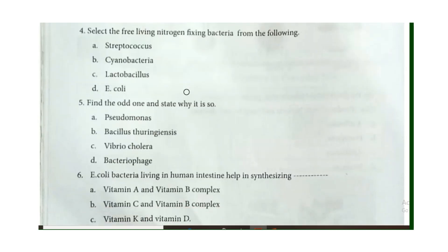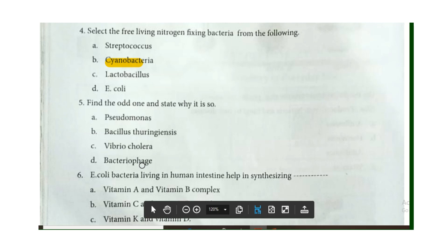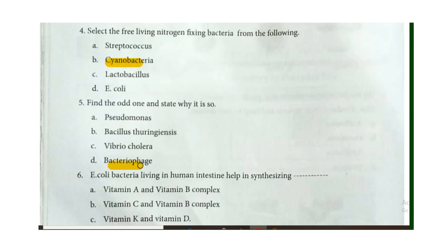Select the free-living nitrogen-fixing bacteria from the following cyanobacteria. Find out the odd one and state why it is so. The four options are: Pseudomonas, Bacillus thuringiensis, Vibrio cholerae, and Bacteriophage. The answer is Bacteriophage, because Bacteriophage is a virus, while the other three options are bacteria.